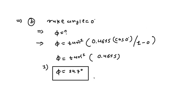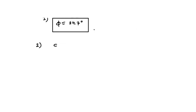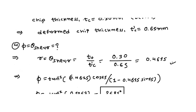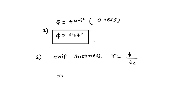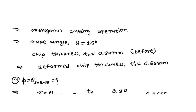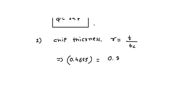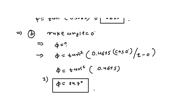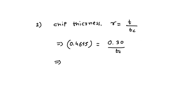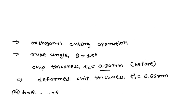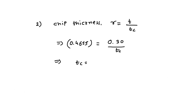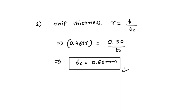In the second sub-part, we need to find the chip thickness. Using the formula r equal to t0 divided by tc, and knowing r is 0.4615 and t0 is 0.30 millimeter, since the angle change has no direct relation to chip thickness, tc remains the same at 0.65 millimeter.